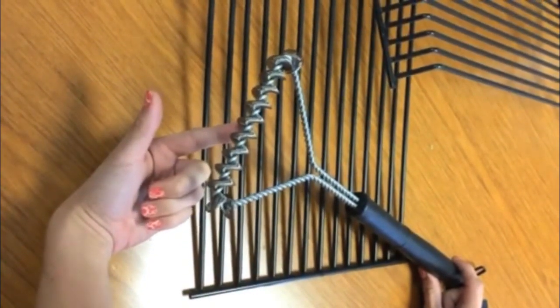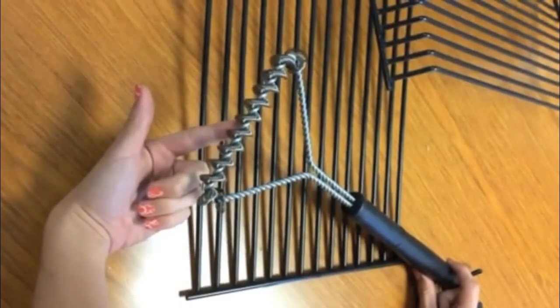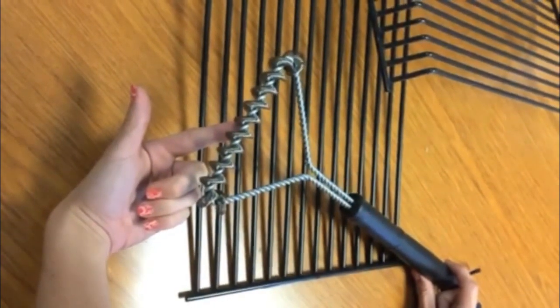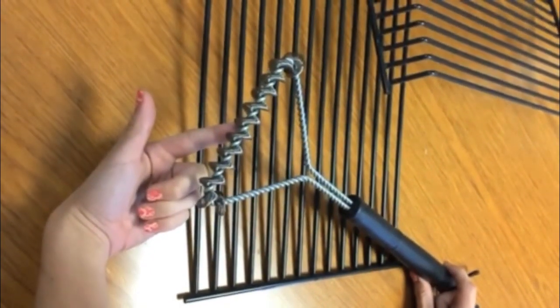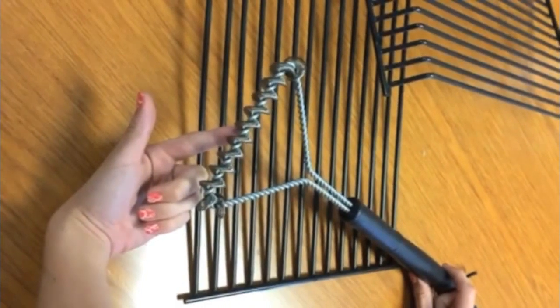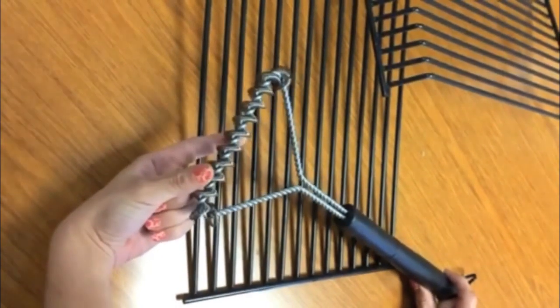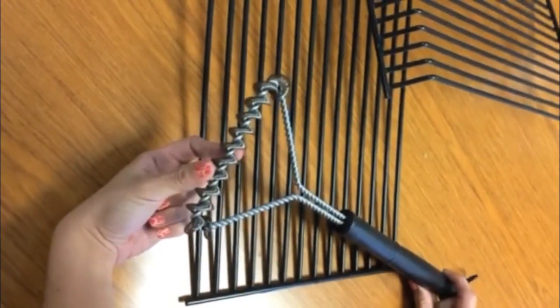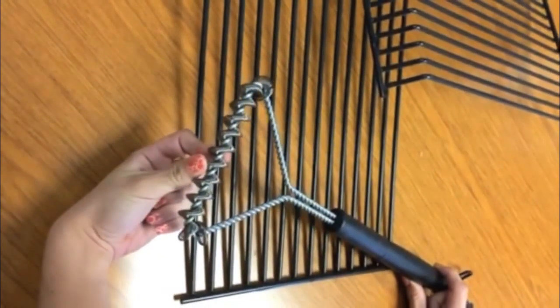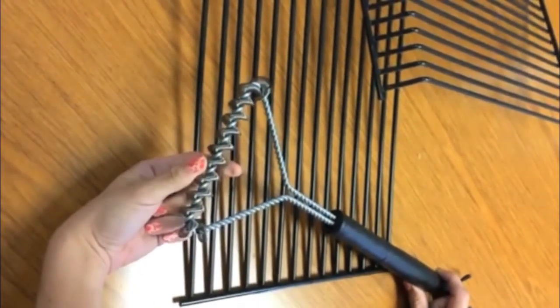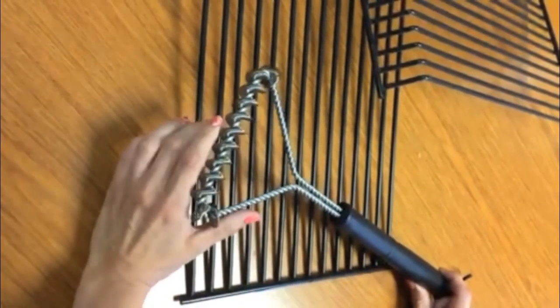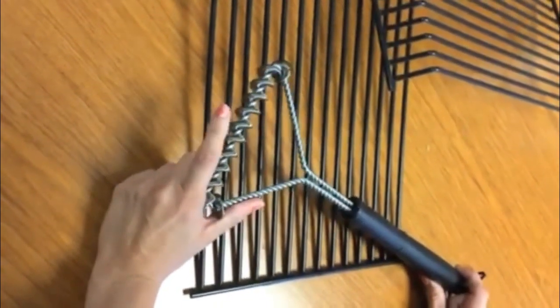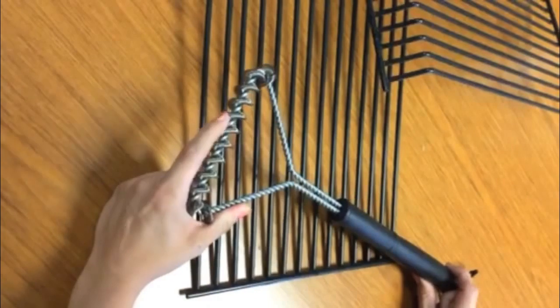Basically, we had a customer ask if this was safe to use on porcelain coated cooking grids. What we usually recommend for porcelain coated cooking grids is that you have a brass bristled brush. The brass is softer than the porcelain, so it gets off the cooked-on food but it does not chip off the porcelain. This is not brass, but additionally, this is also not bristles.